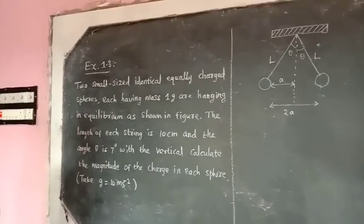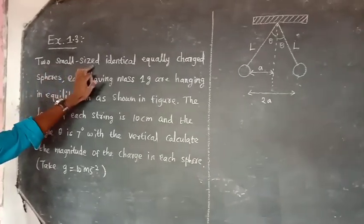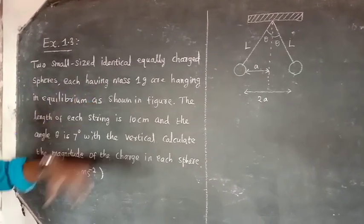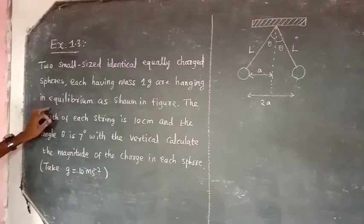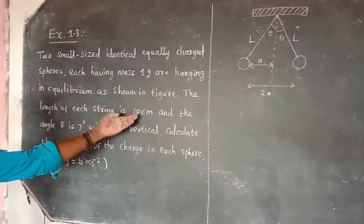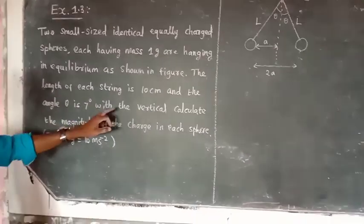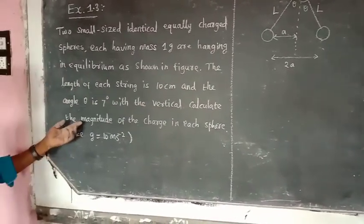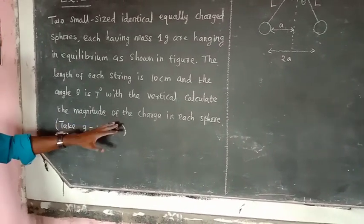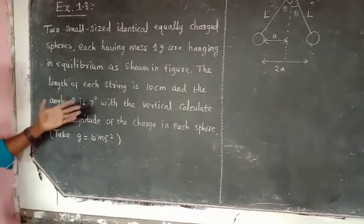Two small equally charged spheres, each having mass 1g, suspended from a point. The length of the string is 10cm and theta is 7 degrees with the vertical. The charge is 50 microcoulombs.